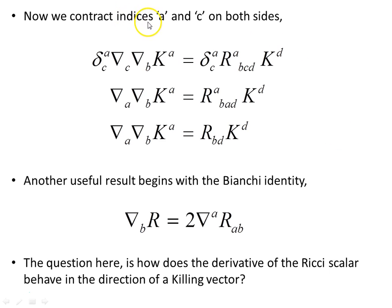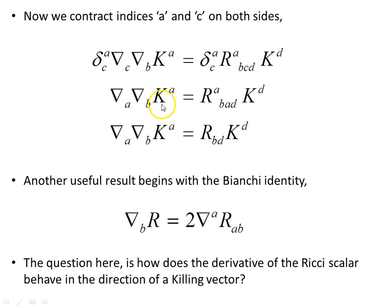Next, we contract the indices a and c on both sides using the Kronecker delta. When c equals a, we contract and make c disappear. On the left this gives us one object, and on the right we sum out the a indices and are left finally with an important and very useful object.